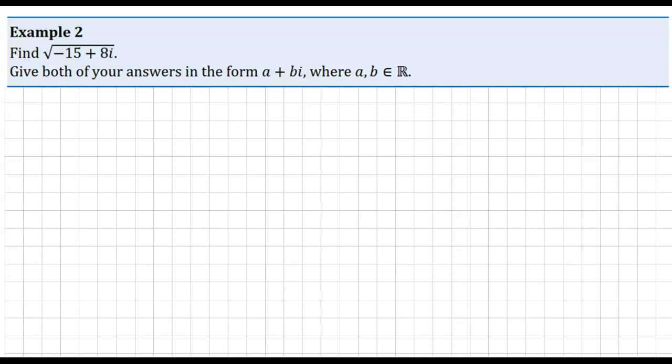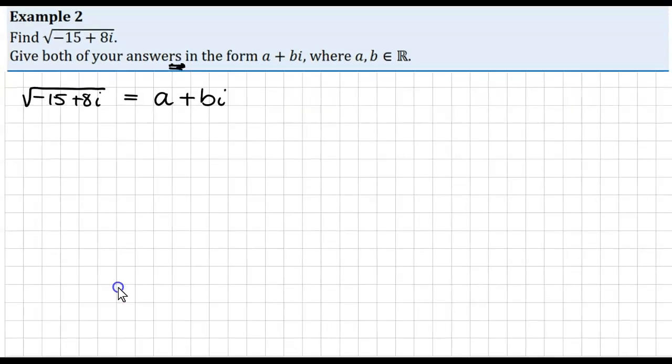So the first thing we do is we let that square root equal, the same as in the last example, or any example with these. We know our answers are going to be in the form A plus Bi, and they've told us that here, so I just put my square root complex number equal to that. Now, and remember it says answers here as well, so that's something to keep in mind as well.